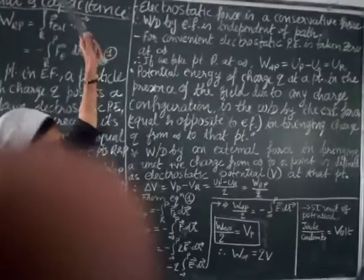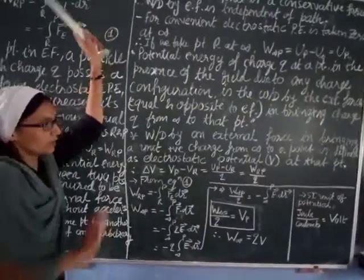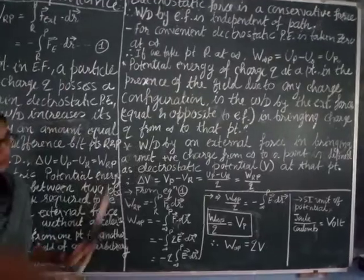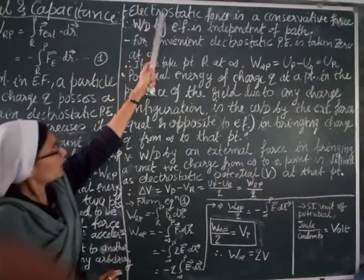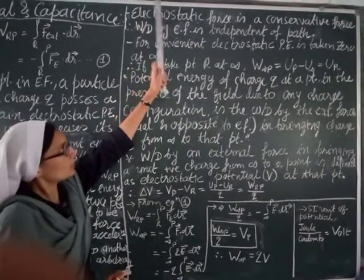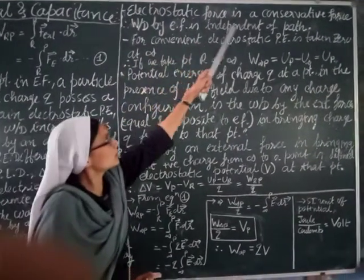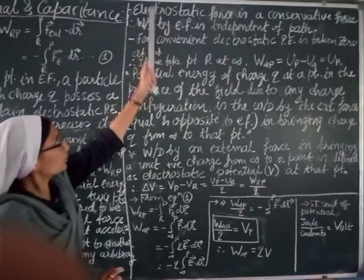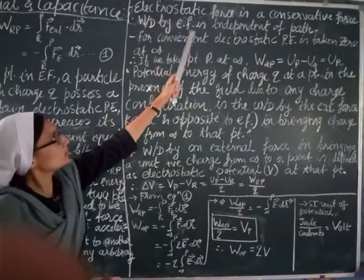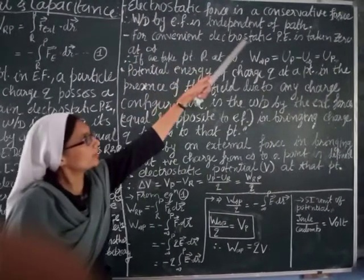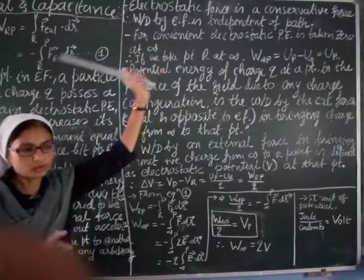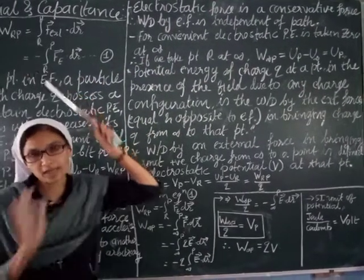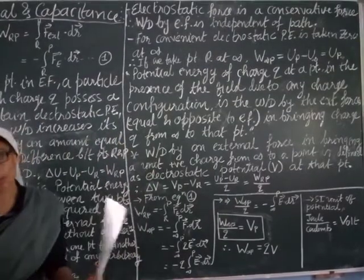This is the potential energy difference between two points. Now we are going to talk about infinity. The electrostatic force is a conservative force; if it is conservative, that means the work done by the electric force is independent of path.